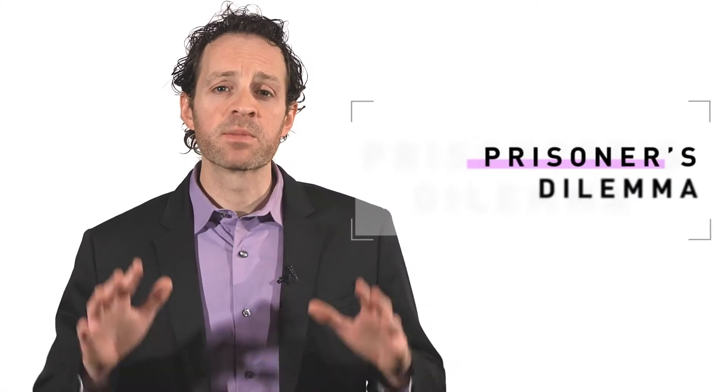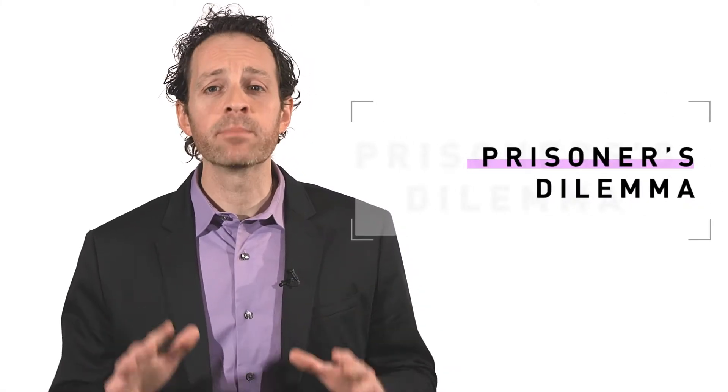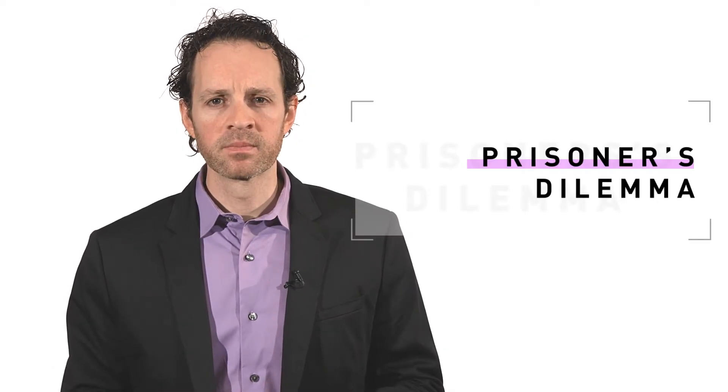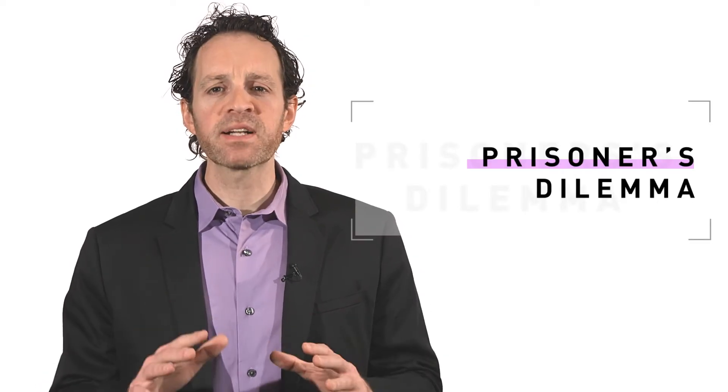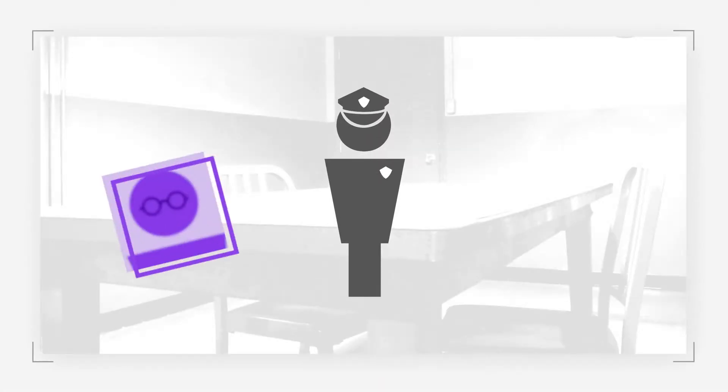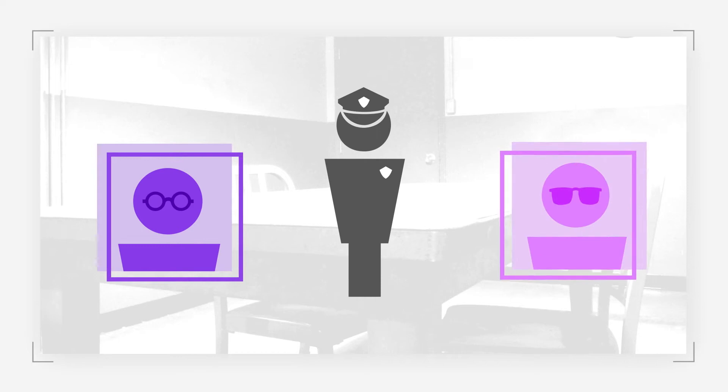The Prisoner's Dilemma is the most well-known game in game theory. Here's the basic setup. Suspected of committing a crime, Bill and Ted are arrested by police and are interrogated in separate rooms. They have no way to communicate or coordinate with each other. The interrogating officers offer each of the suspects the following terms.